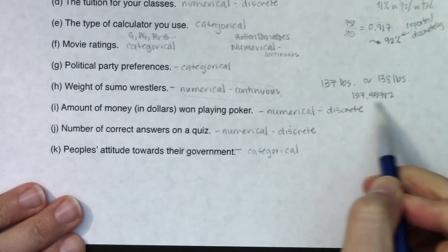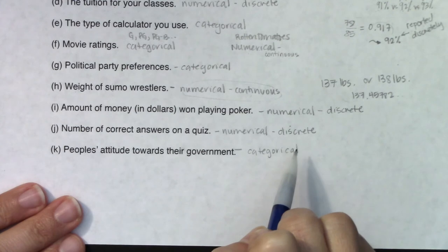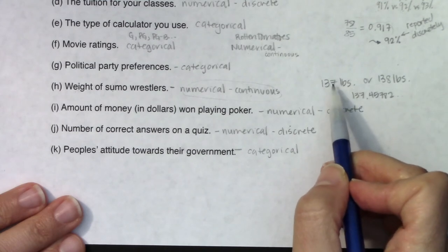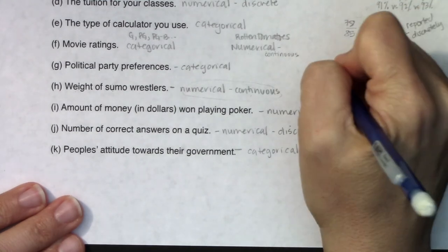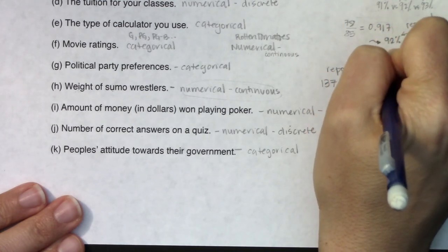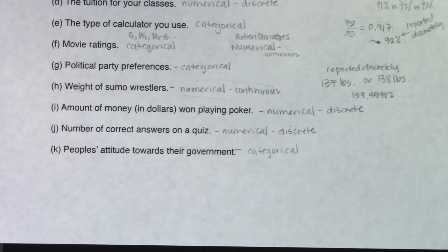I could weigh this, but that's why weight is continuous because you can have any version of digits after the decimal point. But again, it's reported discretely. We tend to just cut things off and report them discretely even though theoretically they are numerical continuous. Probably because it just saves us some time.